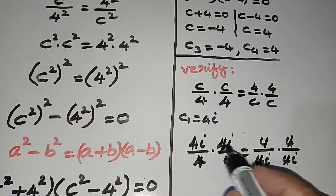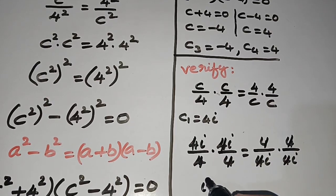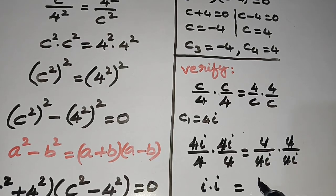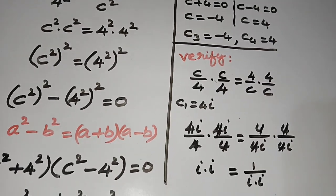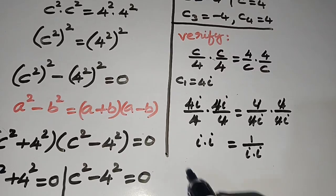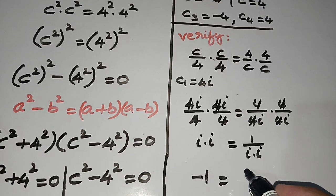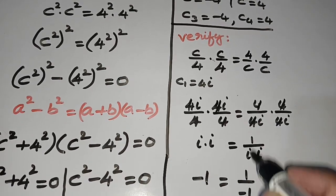After cancelling, we have i times i equals 1/i times 1/i, which is 1/(i·i). We know that i times i is -1, and on the right side we have 1/(-1).